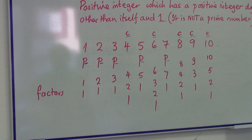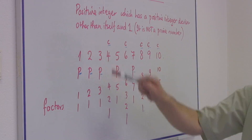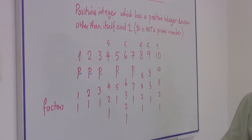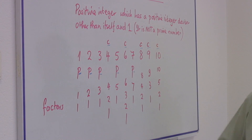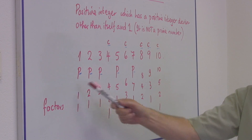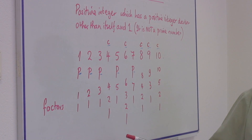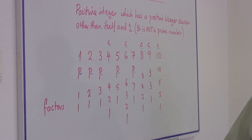Look at the number one. It has factors. Factors are numbers which when divided into that number give you a whole number. So the factors of one are one and one — it has only one factor.